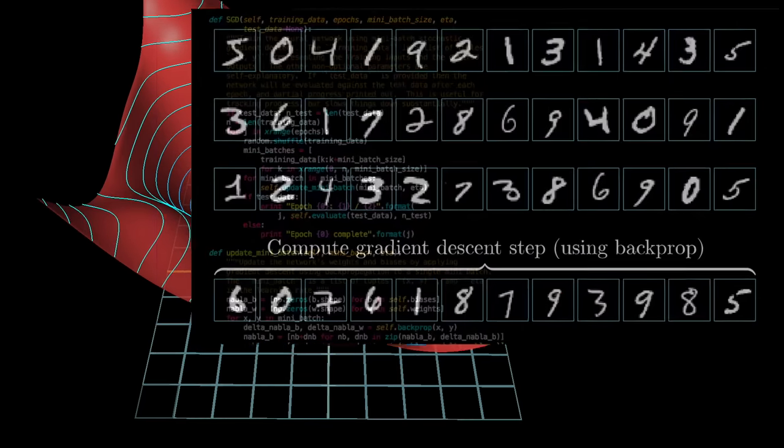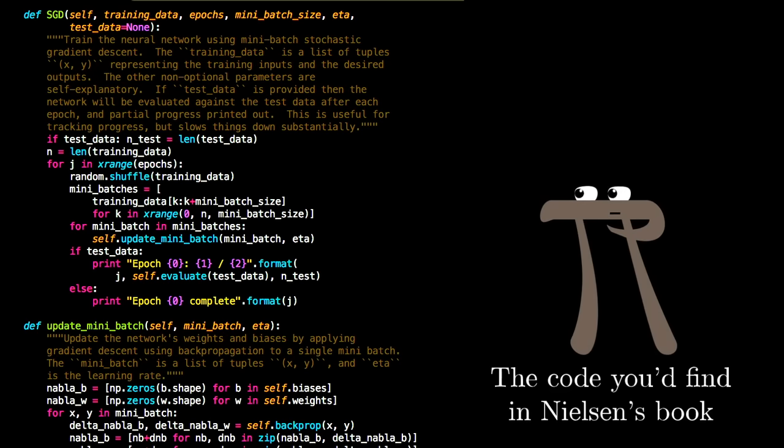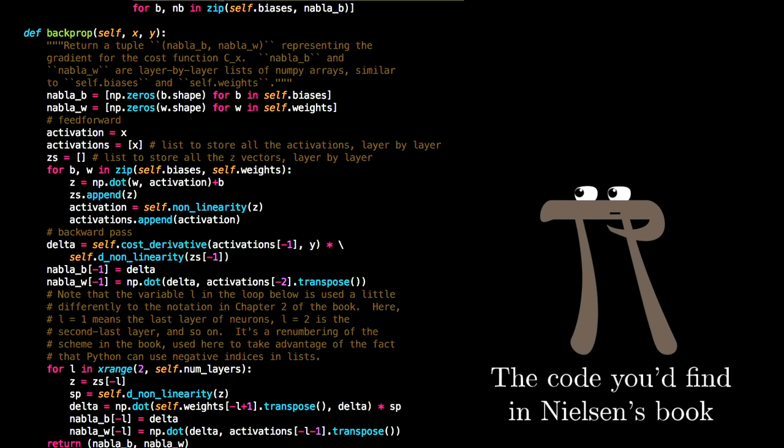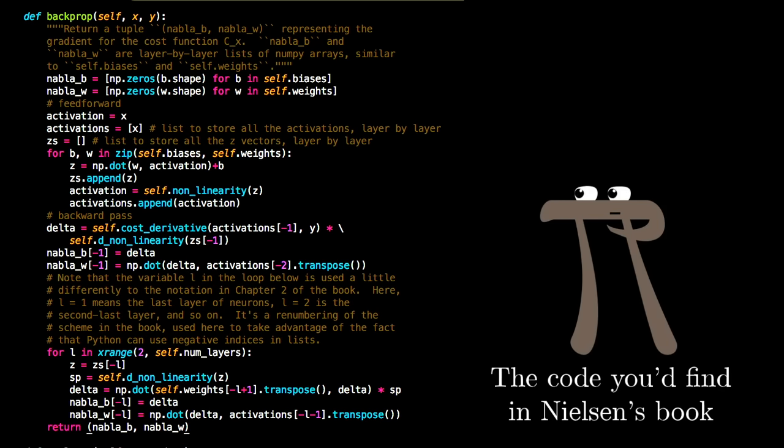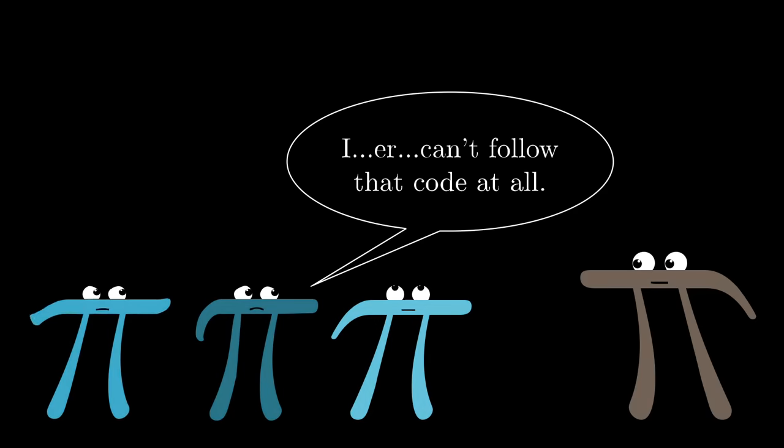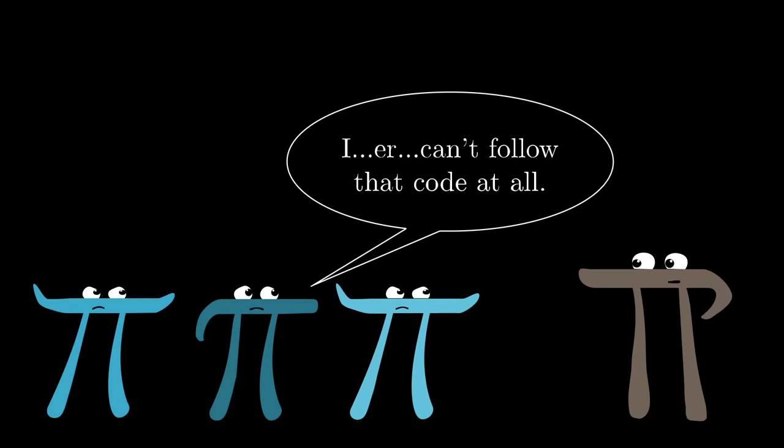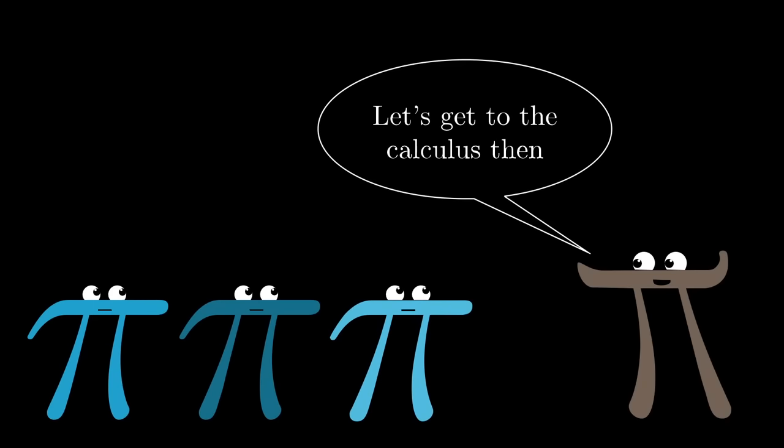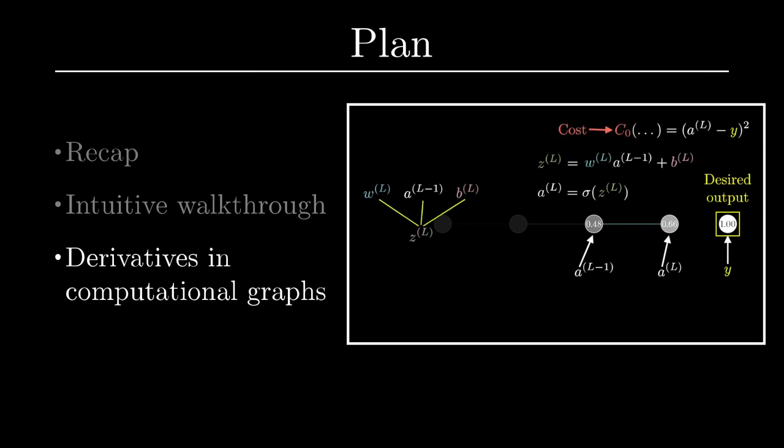So with all of that said, every line of code that would go into implementing backprop actually corresponds with something that you have now seen, at least in informal terms. But sometimes knowing what the math does is only half the battle, and just representing the damn thing is where it gets all muddled and confusing. So, for those of you who do want to go deeper, the next video goes through the same ideas that were just presented here, but in terms of the underlying calculus, which should hopefully make it a little more familiar as you see the topic in other resources.